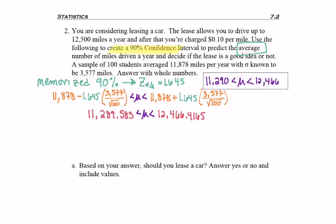So I have found that the average number of miles driven per year with somebody in my situation is probably between 11,290 miles and 12,466 miles.